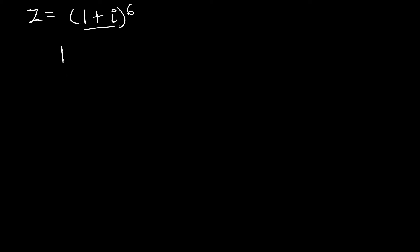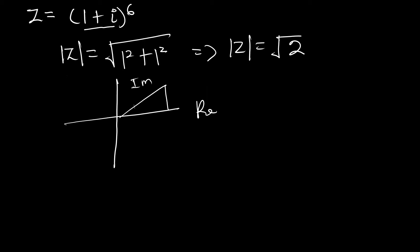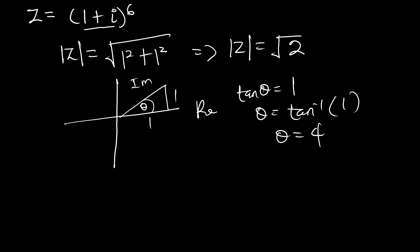First, find the modulus: the magnitude equals the square root of 1² + 1², which gives us √2. Then find the argument. The real and imaginary parts are both 1, so this lies in the first quadrant. θ = tan⁻¹(1/1) = tan⁻¹(1) = 45 degrees.